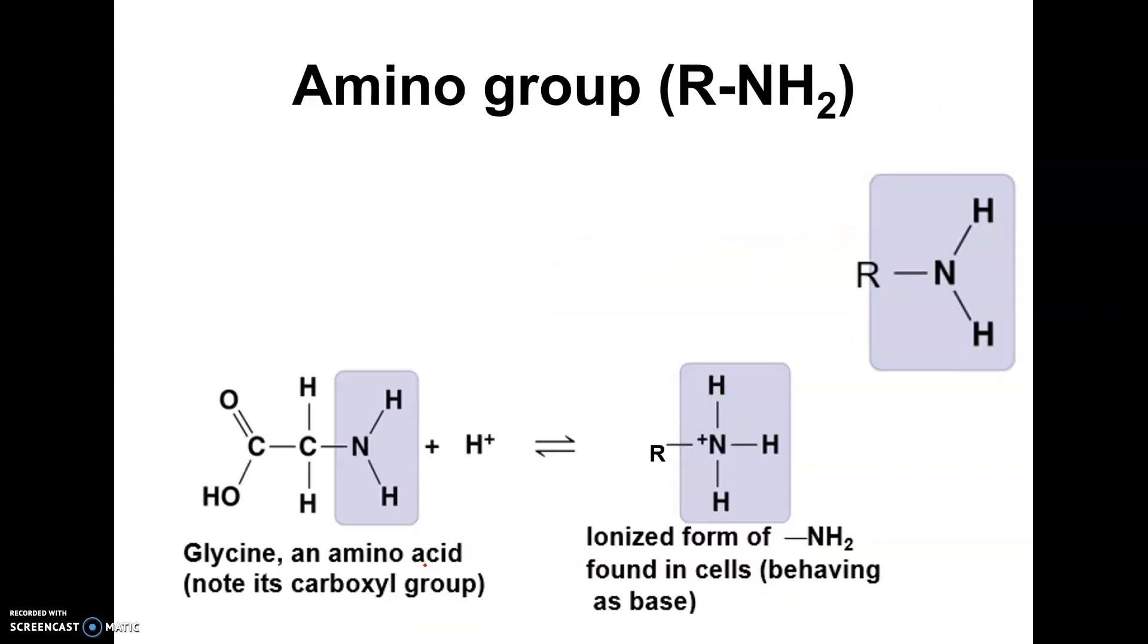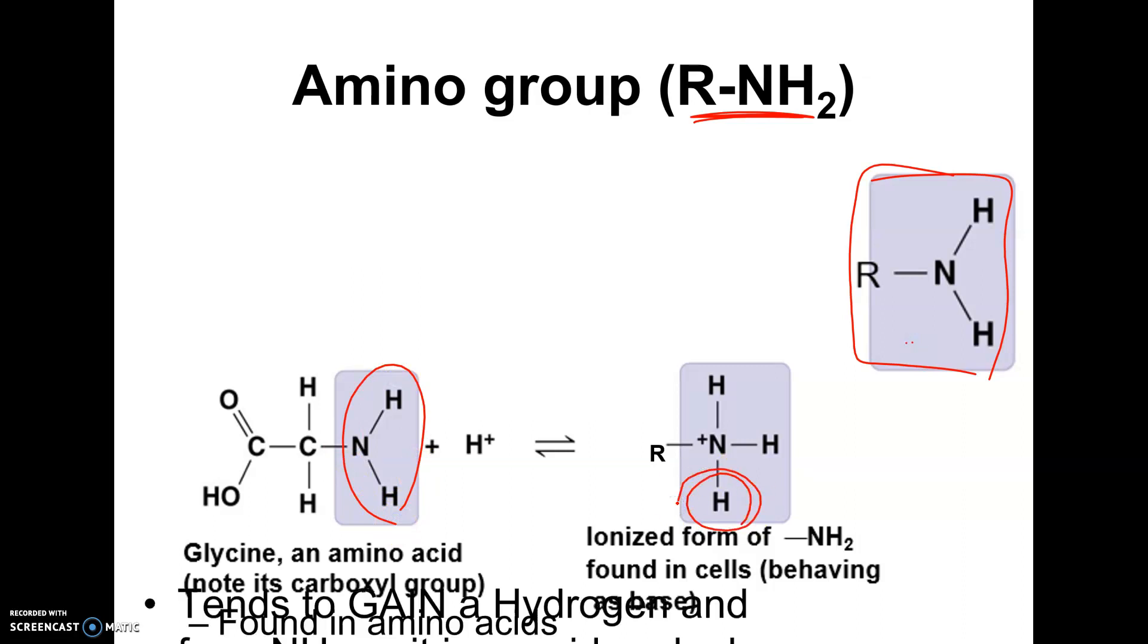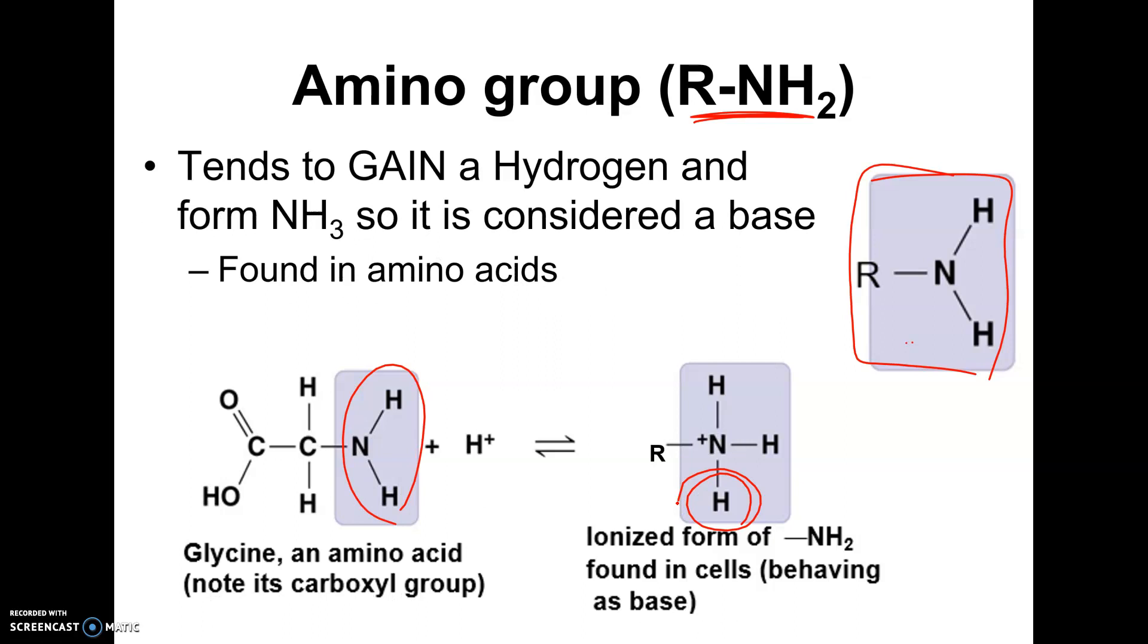All right, our next one is called an amino group. So this is sort of the short, condensed way of writing it. This is the Lewis structure of the amino group, and it behaves as a base. Look here. Here's NH2. That's our amino group, but look what it does. It tends to pick up hydrogens. So it behaves as a base.